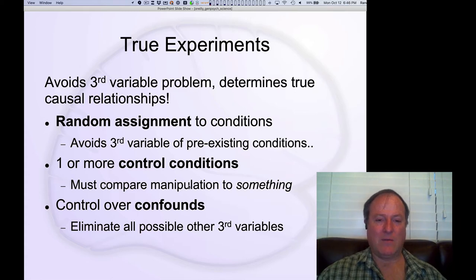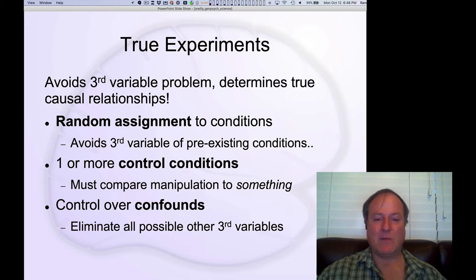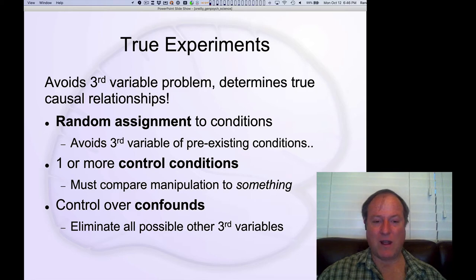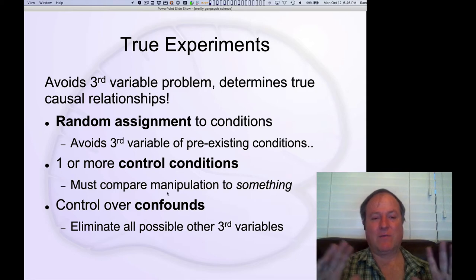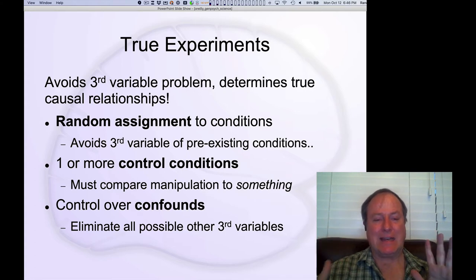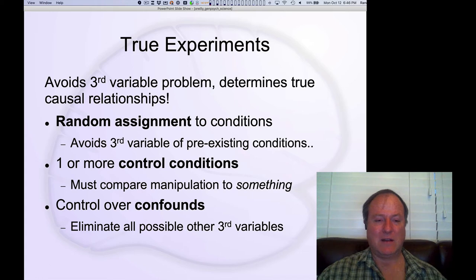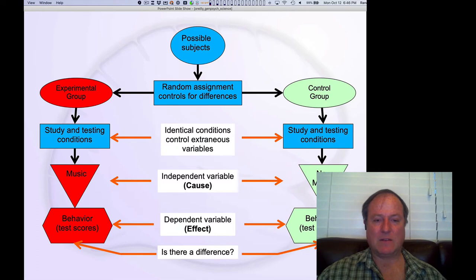We have one or more control conditions — somebody who's not getting manipulated, or at least getting manipulated in a different way. And then you have a manipulation condition where you do something and you're looking at the difference between those two populations. This gives you control over confounds — these possible third variable problems.